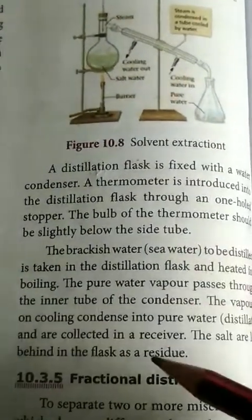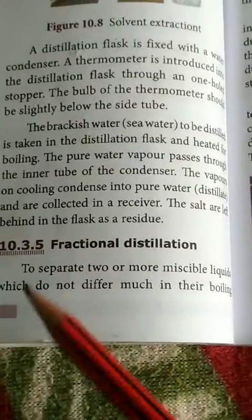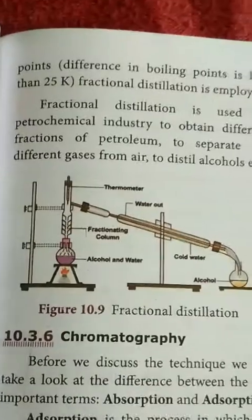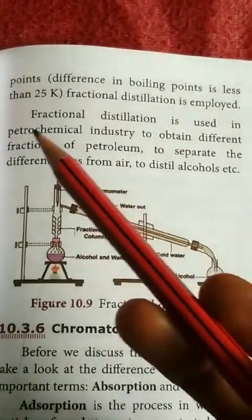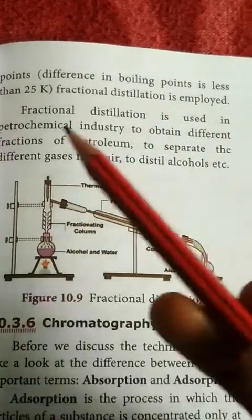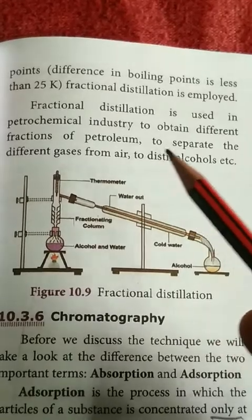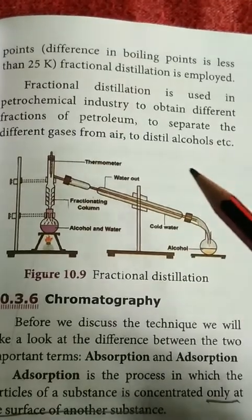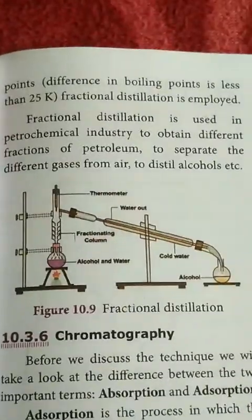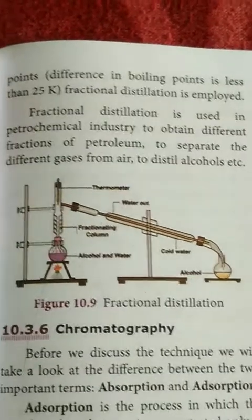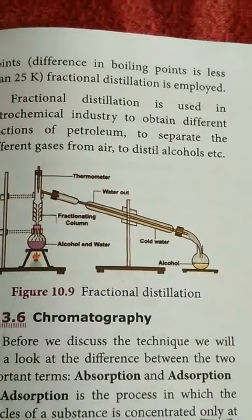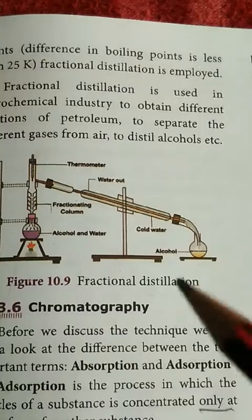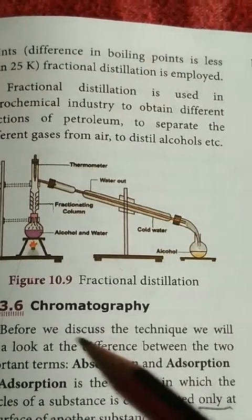Next, let us see fractional distillation. Fractional distillation is used to separate two or more miscible liquids which do not differ much in their boiling points — differing by less than 25 Kelvin. Fractional distillation is used in the petrochemical industry to obtain different fractions of petroleum, to separate different gases of air, and to distill alcohol.